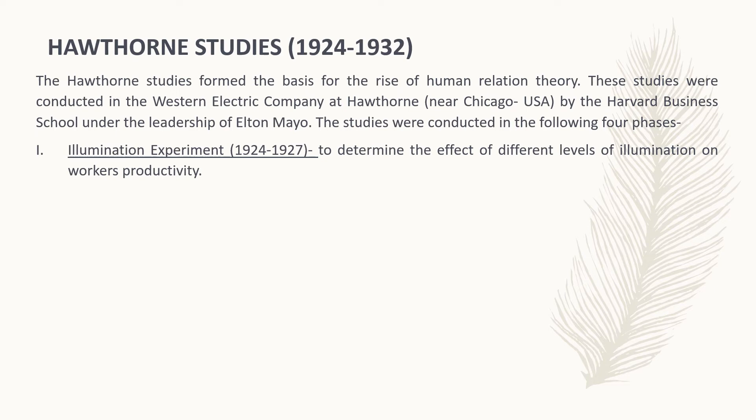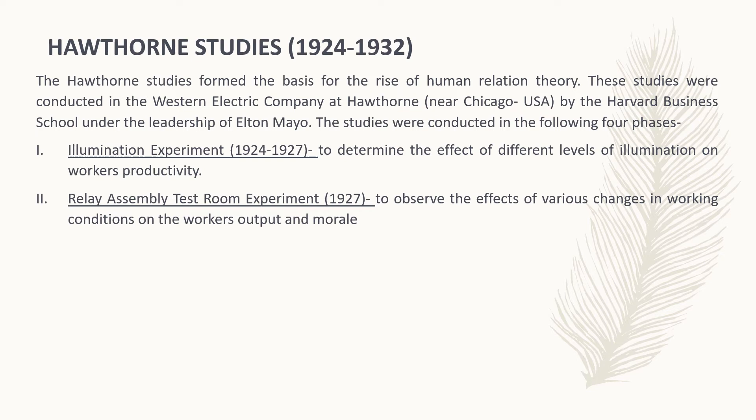The first phase is the illumination experiment from 1924 to 1927. It aimed to determine the effect of different levels of illumination on workers' productivity. The physical environment in which the workers were working was established to acclimatize them to room temperature, humidity, etc. Then slowly the conditions of work were changed to mark the effect of this change on output, and the researchers observed the group and kept accurate records of production.